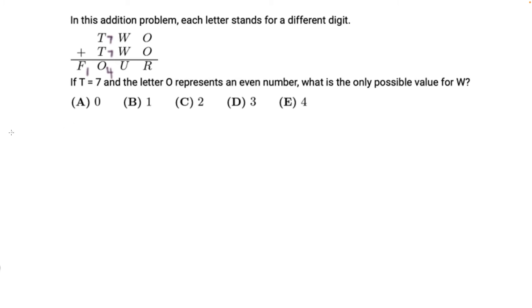So if we make a table here of F, T, O, W, U, and R. We already know that T is 7, O is 4, F is 1. And it's said that each letter O represents an even number, and what is the only possible value for W?